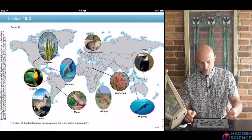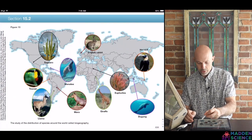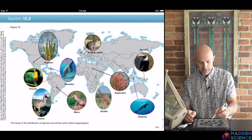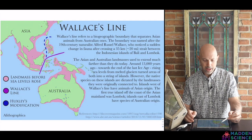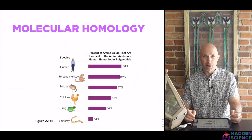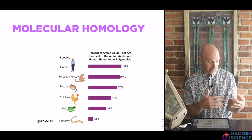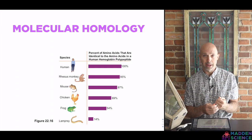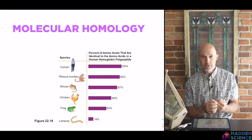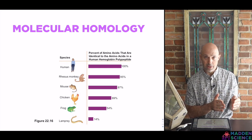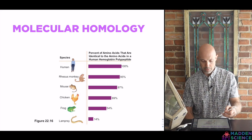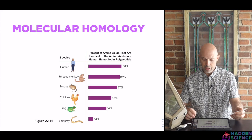Here you can see it with toucans and hornbills, dugongs and manatees, llamas and giraffes, mara and English rabbits. This is a quick slide on the Wallace line in the South Pacific. Now, homology can be molecular too — not just anatomical, but a way of comparing similar DNA, similar RNA, or in this case similar amino acid structure and peptide or protein structure. The more similar that amino acid sequence is, the more closely related — as you look at humans versus monkeys, mice, chicken, frog, and lamprey.